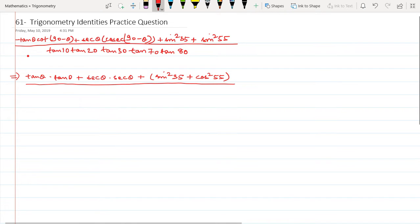And the same arrangement I'm going to do in the denominator as well. So I have tan 10 and tan 80, I'm writing it as cot of 10. I have tan 20 and tan 70, I'm writing as cot of 20. And I have tan 30.